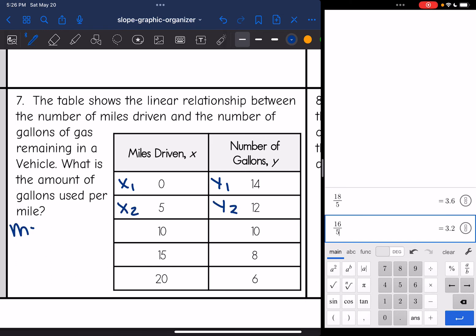And now I'll plug into slope formula by doing 12 minus 14 for y2 minus y1, all over 5 minus 0. And I get negative 2 over 5. We probably would talk about the gallons in decimals. So negative 2 divided by 5 as a decimal is negative 0.4. So they use 0.4 gallons per mile.